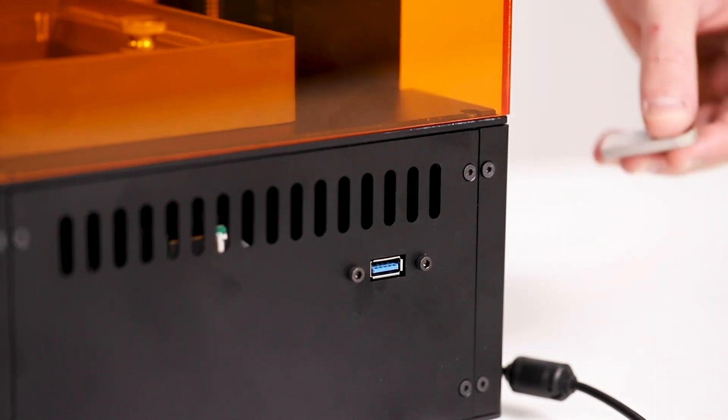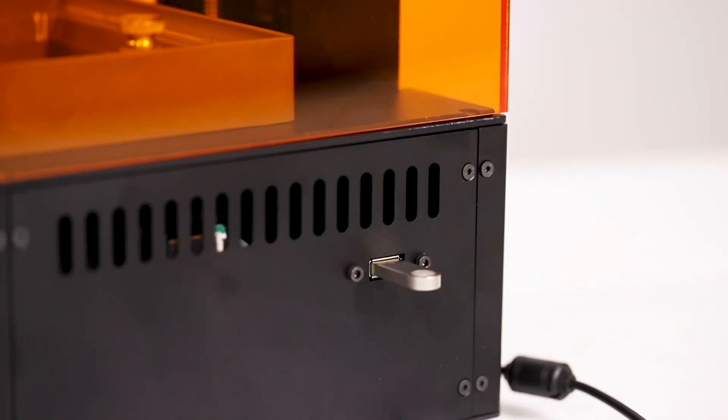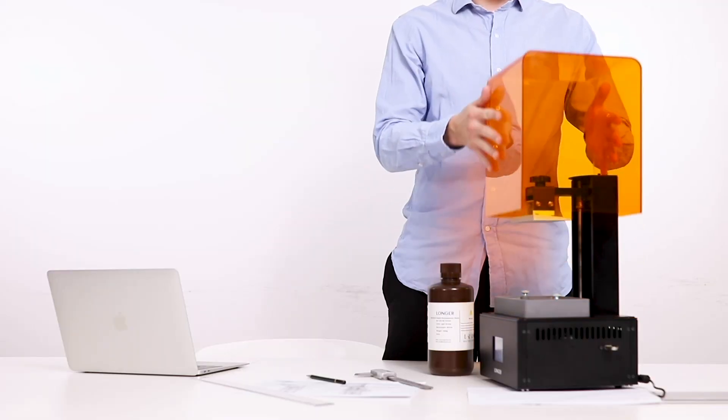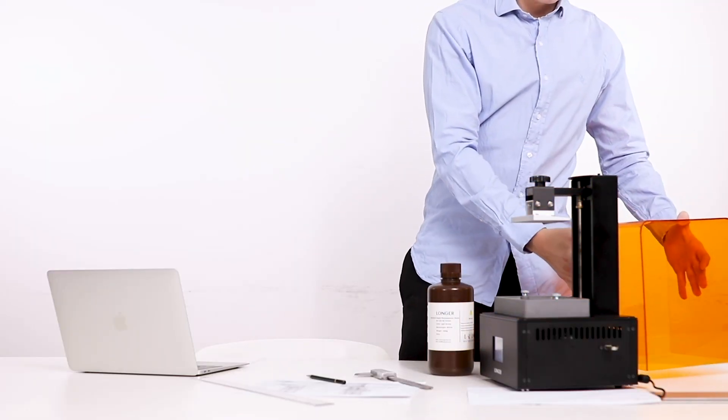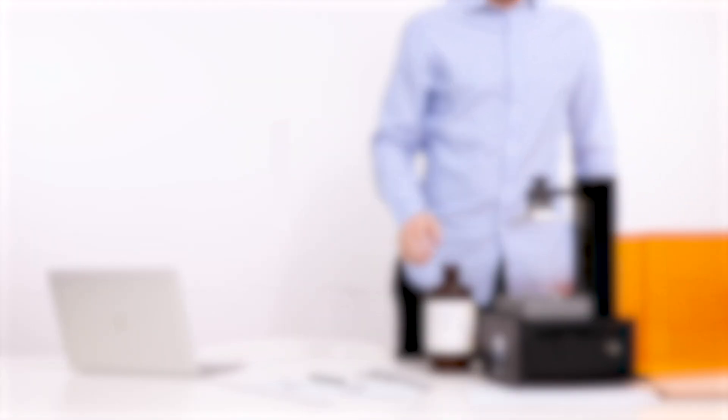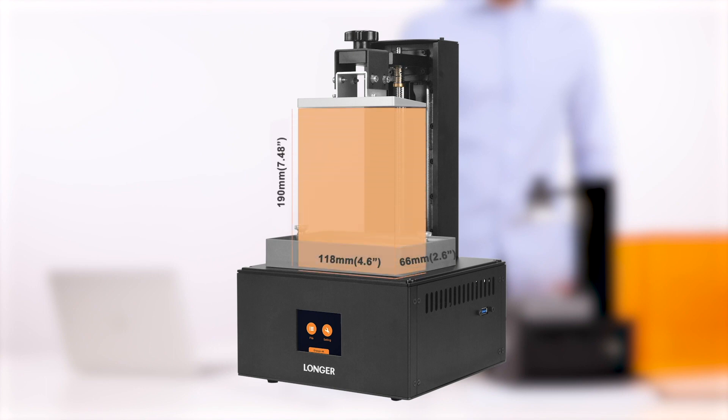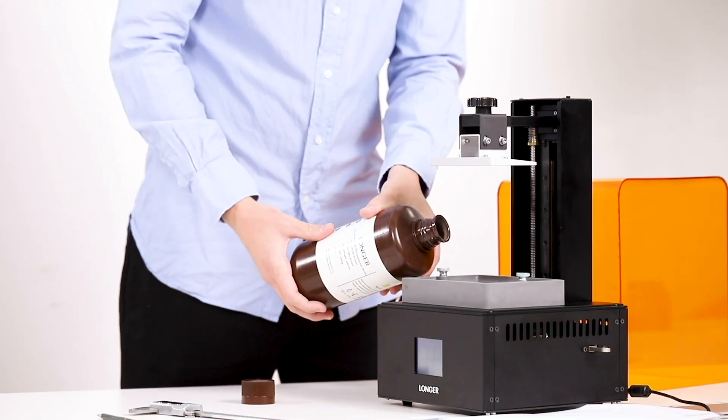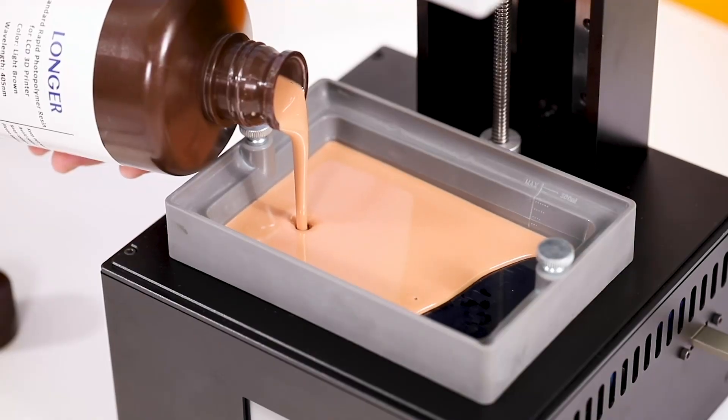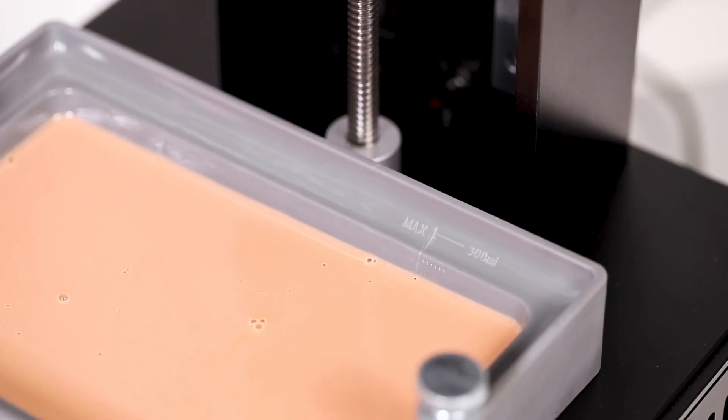After you slice, you can then export and save to a USB disk, then the printing is launched. The printed volume of Orange 4K is 118 by 66 by 200 millimeters. Equipped with a depth-scale plastic resin vat to estimate the approximate resin for printing.